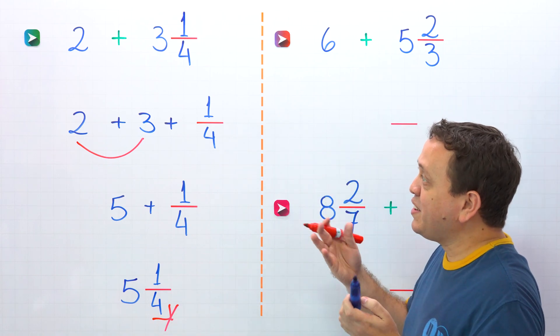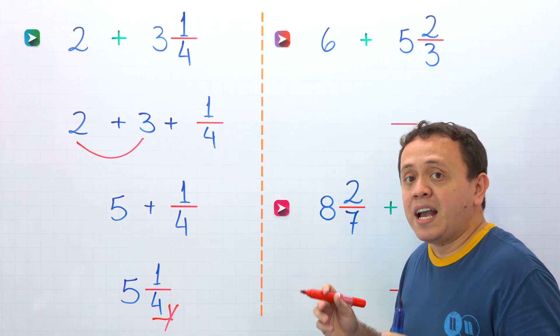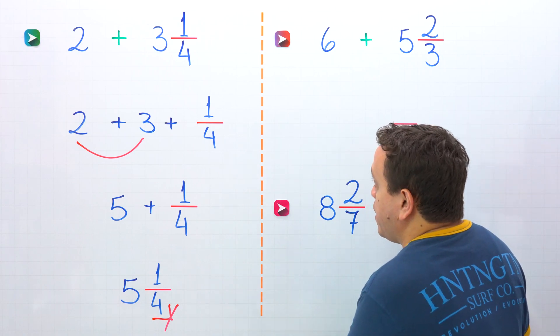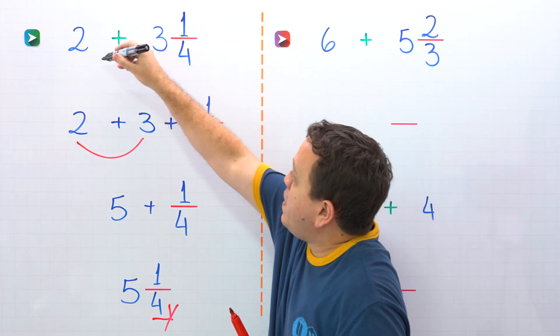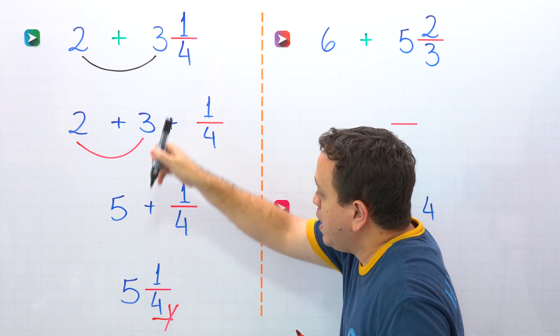Piece of cake! Let's continue with the second method. Here comes the quick method. In this method, we'll start by adding the whole numbers, and 2 plus 3 give us 5.